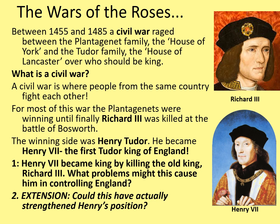Henry's position may have caused him problems because by killing the old king, Richard III's supporters are going to be very angry and out for revenge. However, this could have actually strengthened Henry's position in some way — it wasn't like Richard III was going to come back. And Richard III's followers followed him as their king; now he's dead, who should they follow? Do they rise up and try to install another Yorkist king, or do they accept defeat and follow Henry VII for a quiet and possibly more prosperous life?